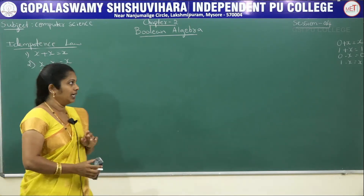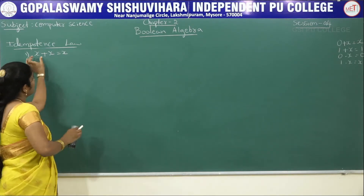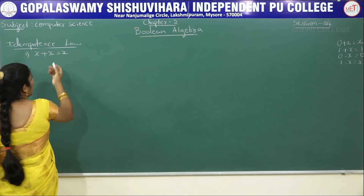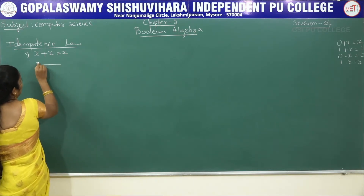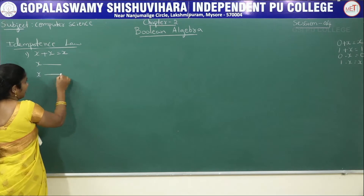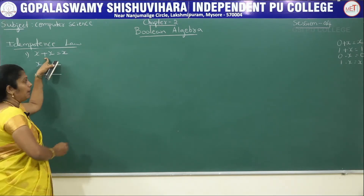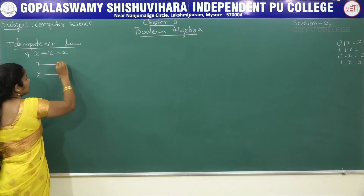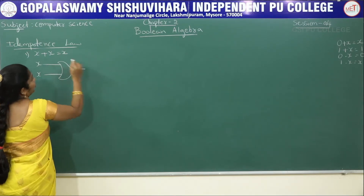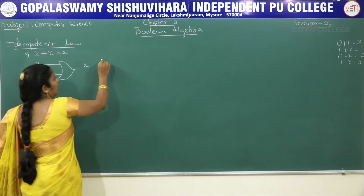We will prove them one by one. Starting with the first one: x plus x equals x. For the circuit diagram, we take x and one more x, and in between we have a plus symbol. Plus symbol means a reverse C shape. The output is also in x format.